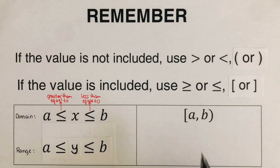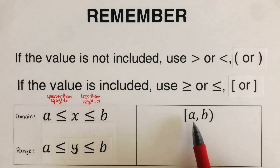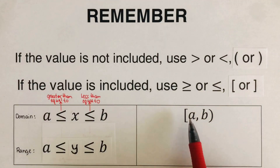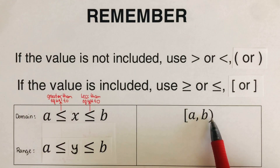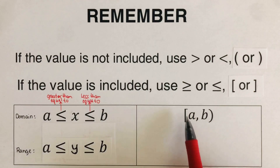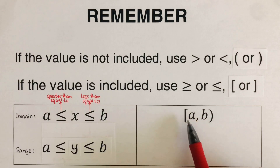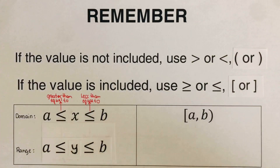If we want it in interval notation, please take note that this is not an ordered pair notation — this is for domain and range. So this a and b can be placed either inside a parentheses or inside a bracket. For domain, the left side represents the leftmost boundary and the right represents the rightmost boundary. For range in interval notation, the left represents the lowermost boundary and the right represents the uppermost boundary. The bracket represents values that are included, and the parentheses represent values that are not included.